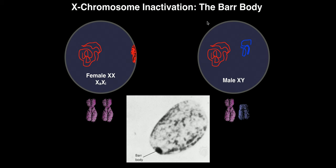X chromosome inactivation leads to the production of what are called bar bodies. On the left side of the screen is the nucleus of a typical healthy female cell with genotype XX — two X chromosomes. One X chromosome is shown on the left in its uncoiled chromatin form, which allows the DNA to be expressed, meaning genes are transcribed. This is how the DNA molecule looks for most of the cell's lifetime; it only coils up during mitosis.